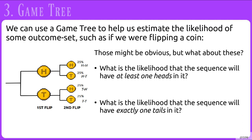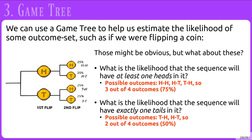But what if we ask a question like: what is the likelihood that the sequence will have at least one heads in it? Or, what is the likelihood that the sequence will have exactly one tails in it? Well, if the outcome has at least one heads in it, there are three total outcomes — three out of four possible, that is 75%. If we want exactly one tails, that is only tails-heads or heads-tails, so only two out of the four outcomes, or 50%.